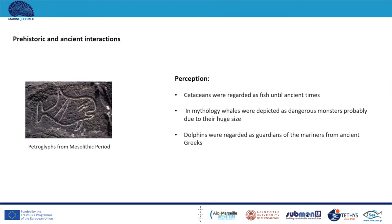Classical mythology and iconographic traditions are full of references to mythical and rare creatures of the sea, enabling us to understand prehistoric and ancient human perceptions about marine animals. Cetaceans were regarded as fish until ancient times, when Aristotle was the first to categorize them separately after observing their differences from fish. In mythology, whales were depicted as dangerous monsters, probably due to their huge size, and were also used for tools, furniture, and oil — making them viable commodities. Dolphins, on the other hand, were regarded as guardians of mariners by ancient Greeks, so people refrained from slaying them except for medical reasons.